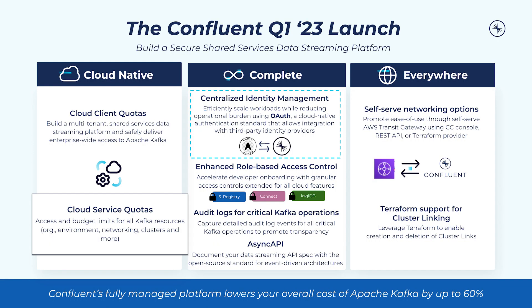Now let's take a look at the rest of the features in the Q1 Confluent Cloud launch. Within the Cloud Native pillar, we bring you Cloud Service Quotas. As organizations expand their usage of data streaming across applications, centralized platform teams need to be aware of limitations for resources and operations within Confluent Cloud. Enterprises will now be able to access the limits for all Kafka resources and operations, enabling them to budget resources across their applications.